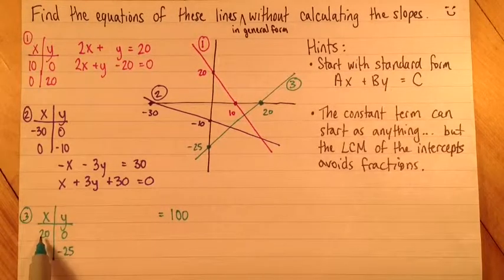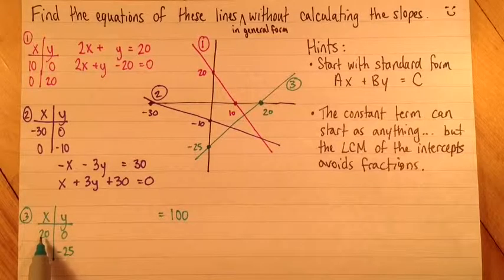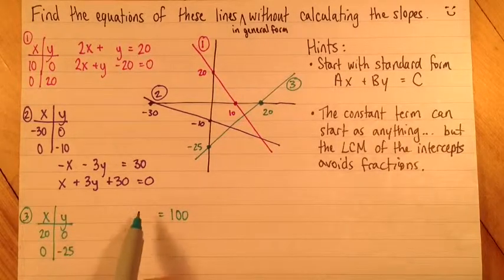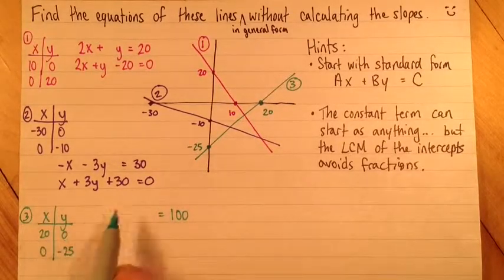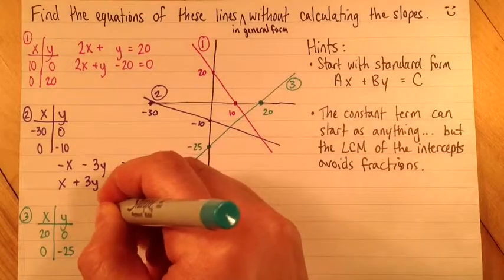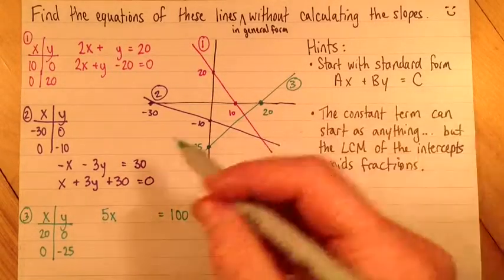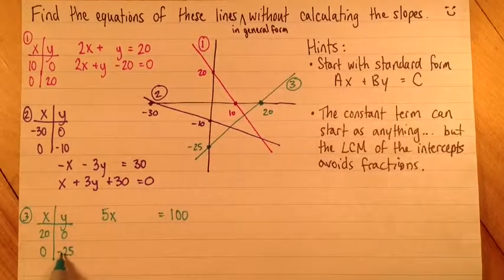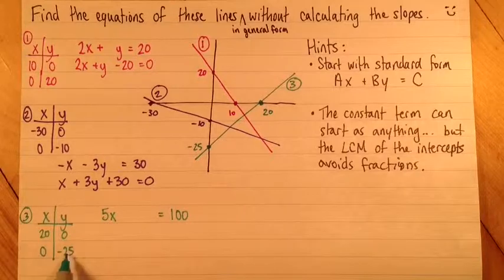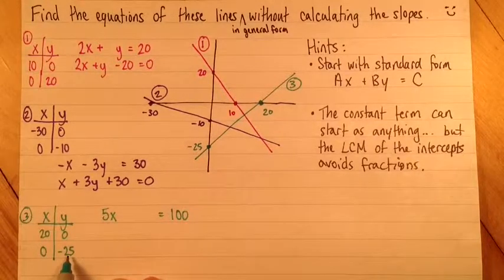Let me look at my first point, my x-intercept, where x is 20. Since my y value is 0, the y term doesn't affect what's going on with this point. How many x's do I need to get 100? That's 5. And then for my y-intercept, how many y's would I need to get 100? That's going to be negative 4.